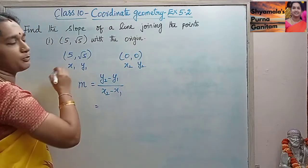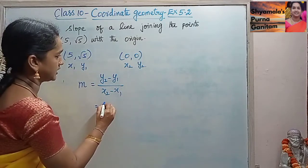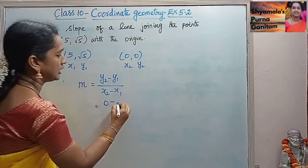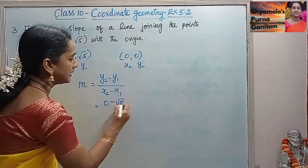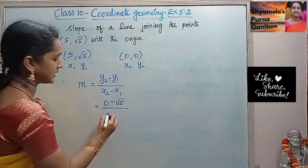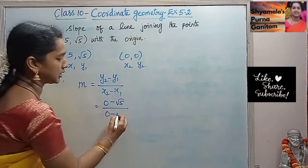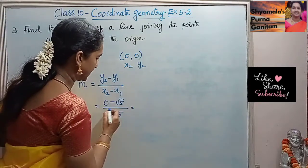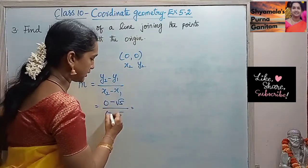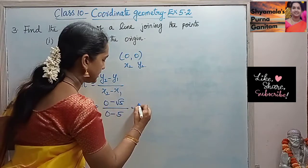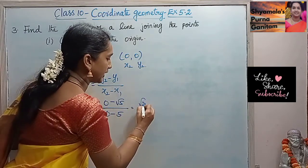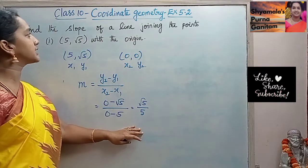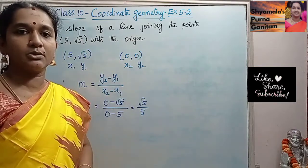Substituting the values: y2 is 0, so 0 minus √5, divided by x2 is 0 minus x1 is 5. Simplifying, 0 minus √5 over 0 minus 5 gives us √5 divided by 5. So √5/5 is the slope for the given two points.